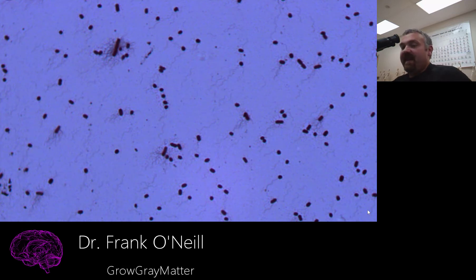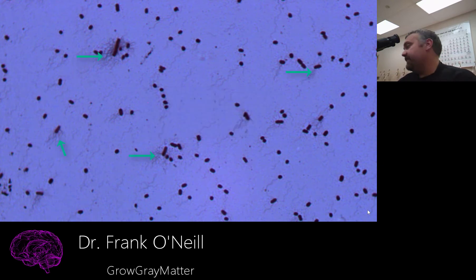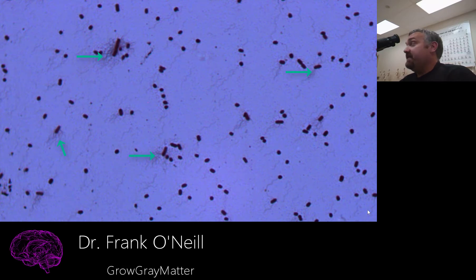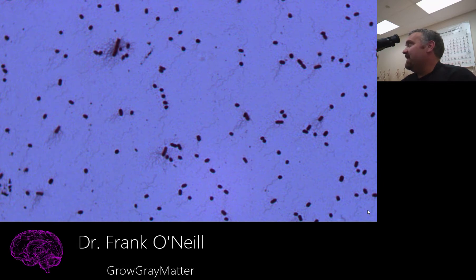Now you can see Proteus vulgaris in all its glory, and you can also see some of the many peritrichous flagella. If you can get to this point, I would say you are a very advanced user of the microscope — you can see bacteria, which are small enough to begin with, and you can even see their tails. I hope you enjoyed this. Go and look at as many structures as you can throughout the world, and enjoy your time learning about the amazing world around us. Have a wonderful day.